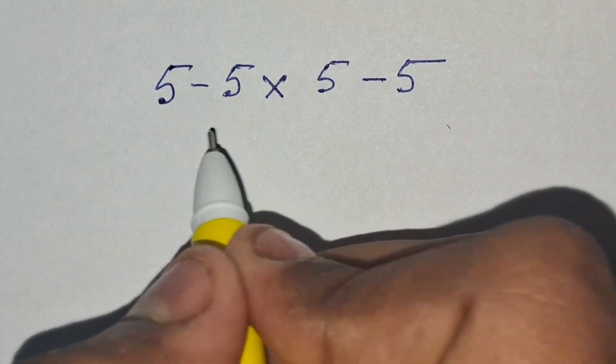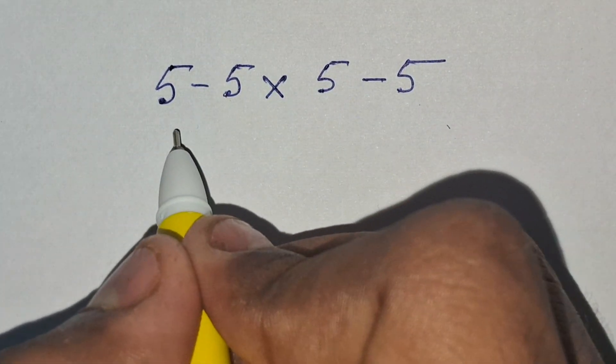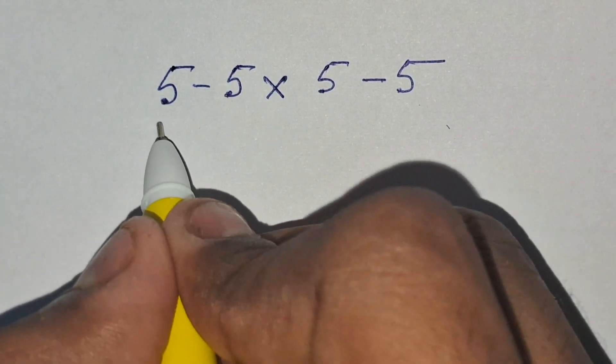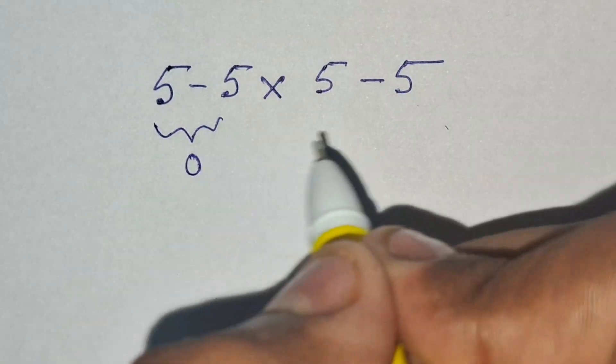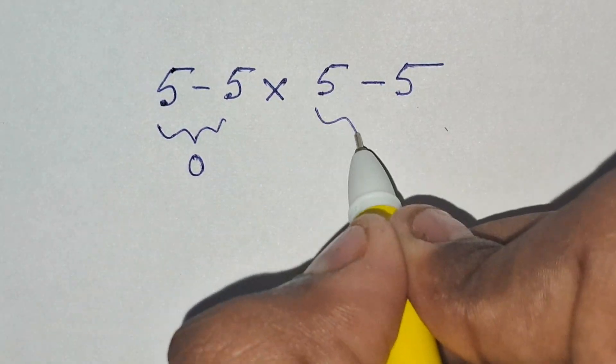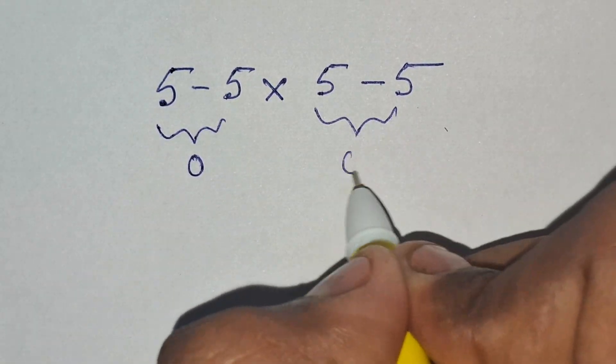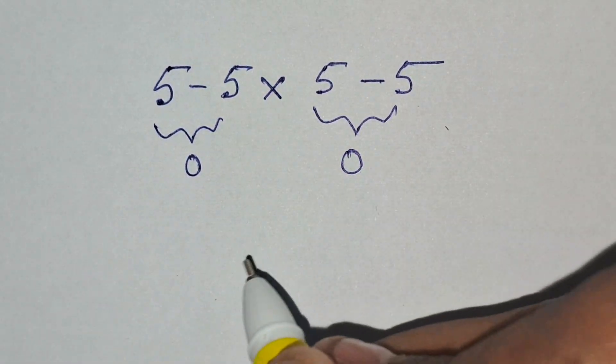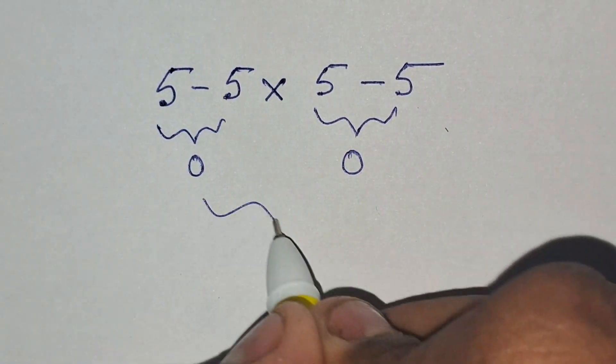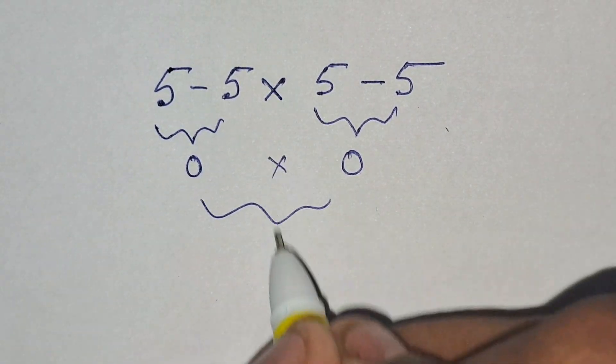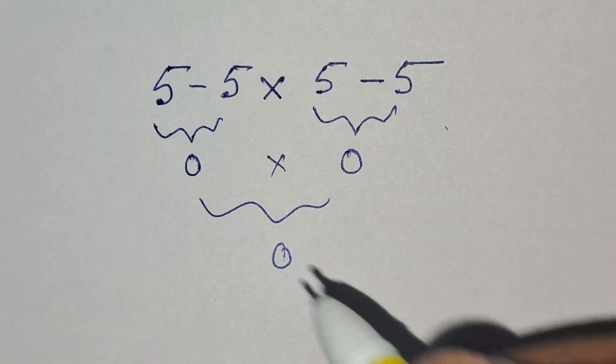At first glance, many people solve it as: 5 minus 5 equals 0, and this 5 minus 5 is also equal to 0. So the whole term becomes 0 times 0 equals 0.